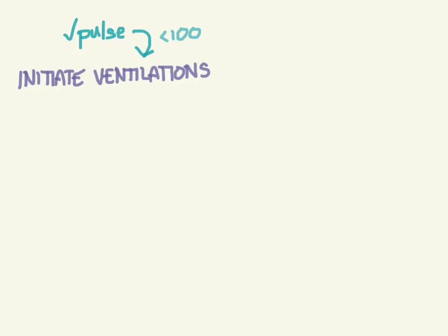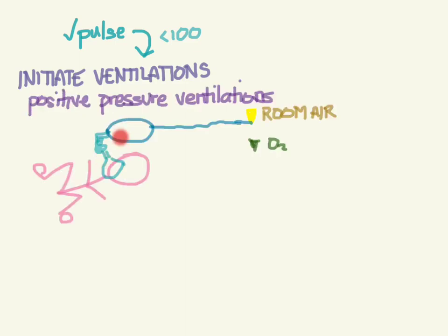Now you're going to check a pulse, and if the pulse is less than 100, we're going to initiate ventilations via bag valve mask—that's positive pressure ventilations. We're going to initiate it with room air, not oxygen. They talk about if you have some sort of blended oxygen thing you can use that, but go ahead and use room air otherwise, because we know that excessive oxygen can be toxic.